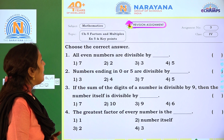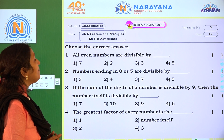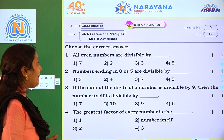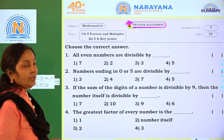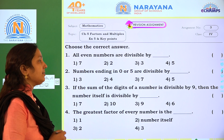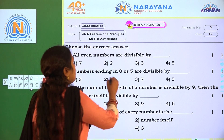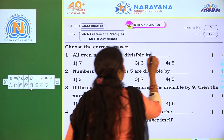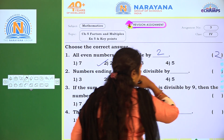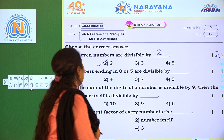I am going to first run: all even numbers are divisible by 2. So which is the correct option, children? Option 2.